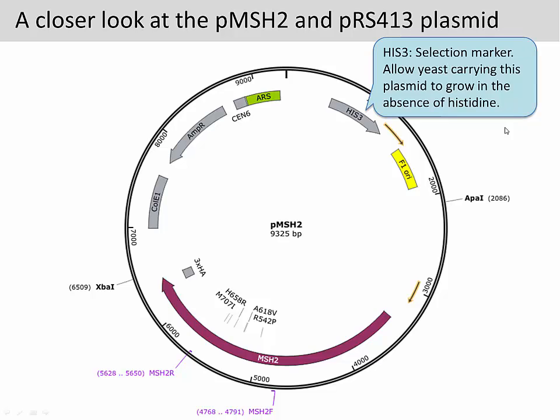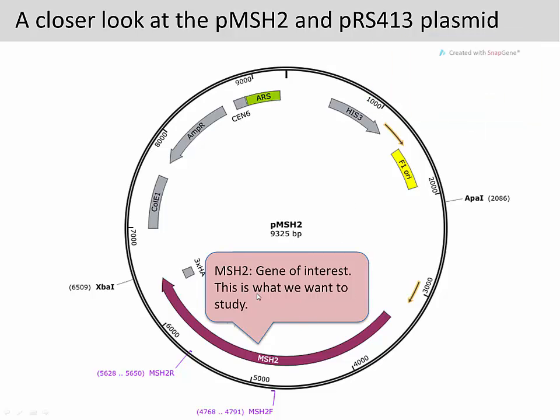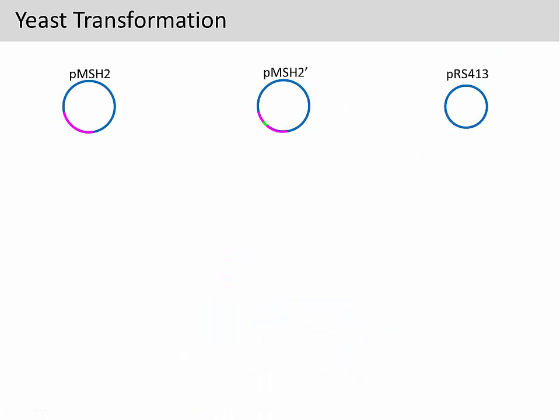Over here, we have another selection marker called HIS3. This will allow yeast carrying this plasmid to grow in the absence of histidine, which is an essential amino acid. Down here is our gene of interest, the MSH2. Once we have determined the identity of the three plasmid DNAs, we can introduce them into yeast and then measure the mutation rate.